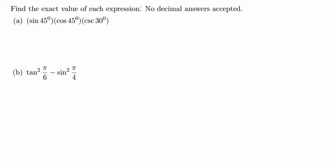Find the exact value of each expression. Do not use a calculator. We have sin 45 degrees, cosine 45 degrees, cosecant 30 degrees. Let's find the value of sine 45. We know the right triangle with 45 degrees that has sides a, b, c.